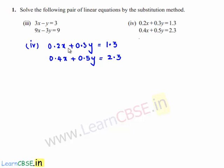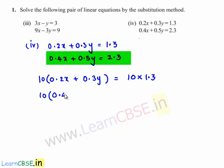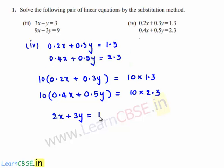Multiply the first equation by 10. We get 10 times of 0.2x plus 0.3y is equal to 10 times of 1.3. Similarly, multiply the second equation by 10. We get 10 times of 0.4x plus 0.5y is equal to 10 times of 2.3. Therefore, we get 2x plus 3y is equal to 13, and 4x plus 5y is equal to 23.